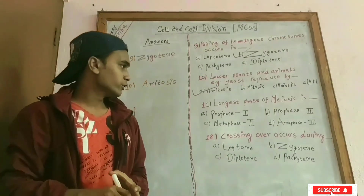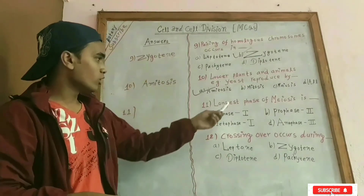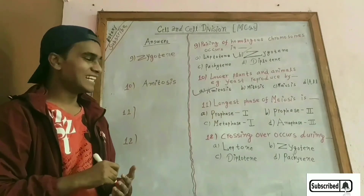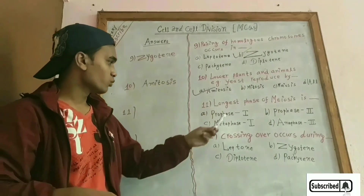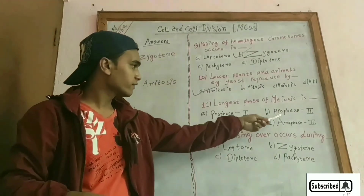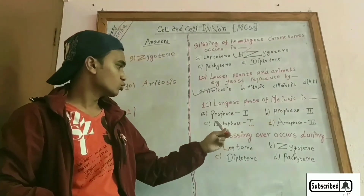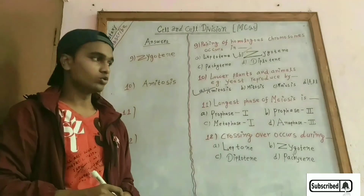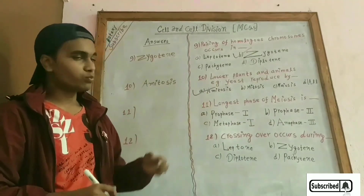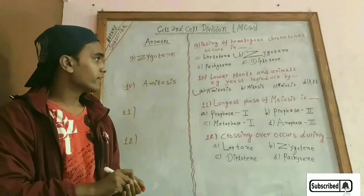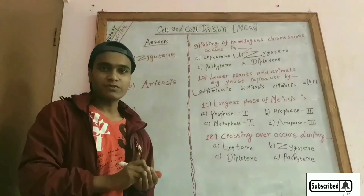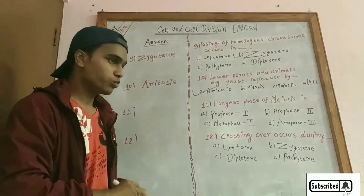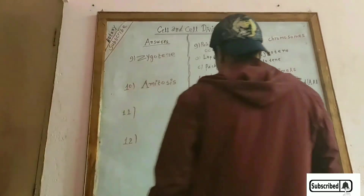In question number 11, the longest phase of meiosis cell division is prophase 1. Options were prophase 2, metaphase 1, and anaphase 2. The longest phase of meiosis cell division is prophase 1.